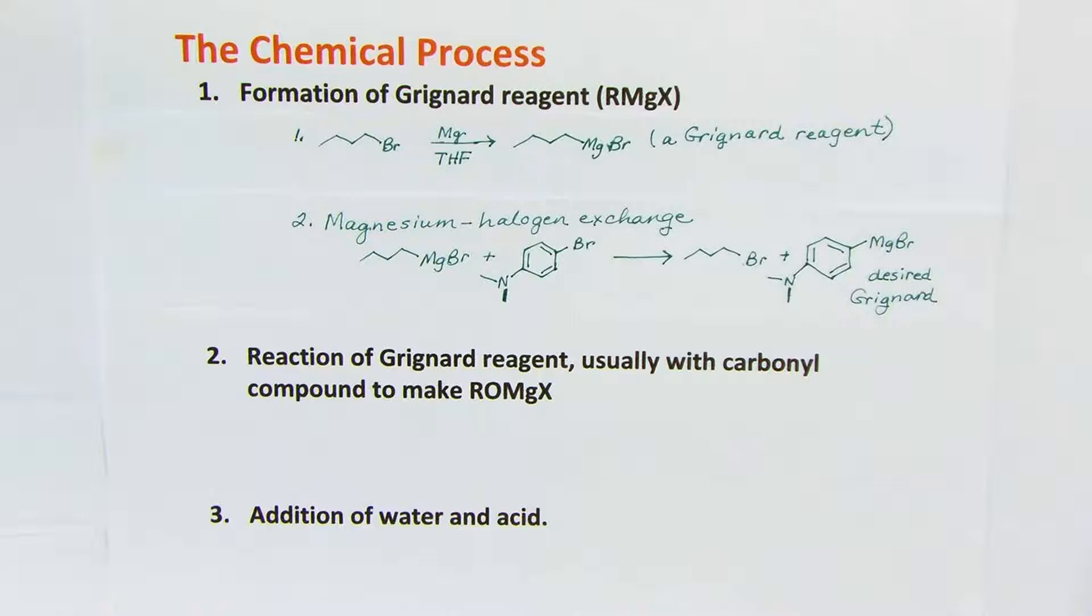Overall the reaction is faster because aryl bromides like the 4-bromo-NN-dimethyl aniline react only slowly with magnesium, but alkyl bromides like N-butyl bromide react quickly, and the metal halogen transfer is fast. So win-win.